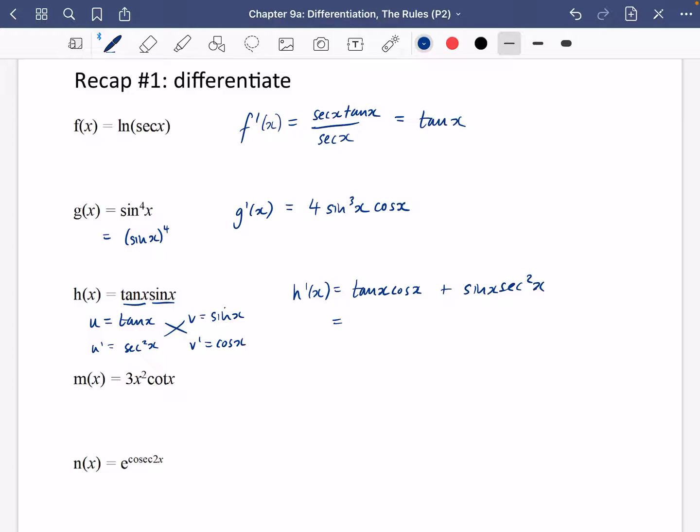Now this can be simplified because tan x is sin x over cos x and you're multiplying it by cos x, so you just get sin x. And sin x sec squared x, well if you think about what that means, you've got sin x multiplied by one over cos squared x.